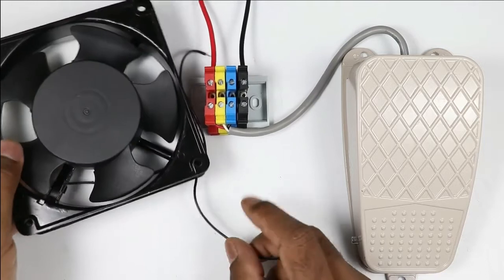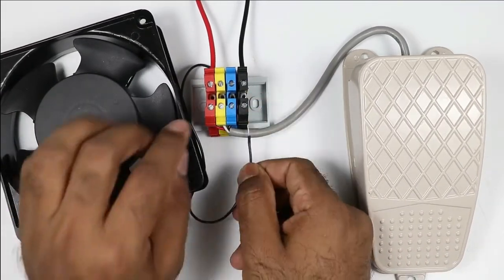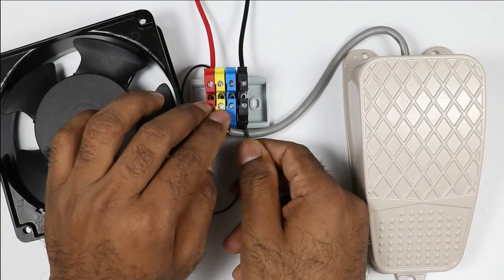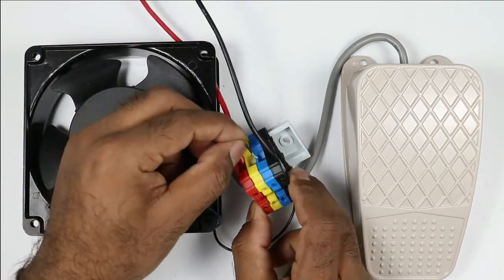What I will do is connect this neutral wire of the fan with the neutral terminal box. So I connect this wire with the neutral terminal. The phase supply wire of this fan is to be connected with the white wire of the pedal switch.